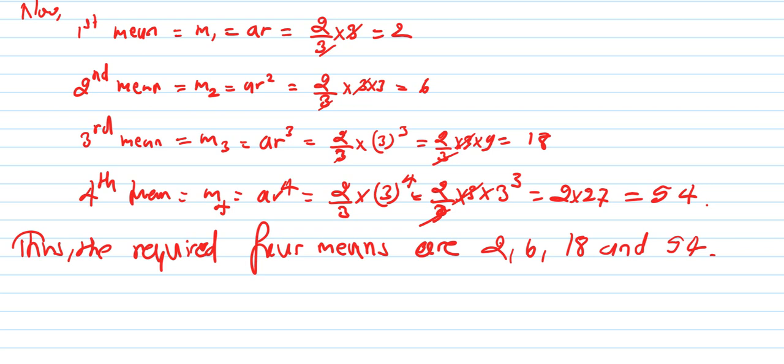So the four means are 2, 6, 18, and 54. This is the type of question and its solution. Practice more such questions. Till then, do whatever you want to do but don't trouble your mother.